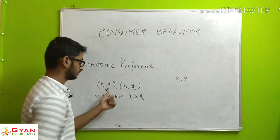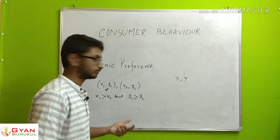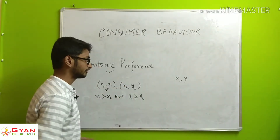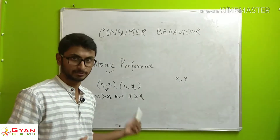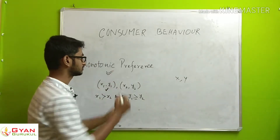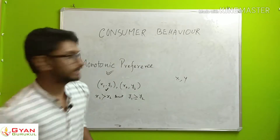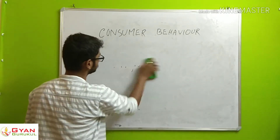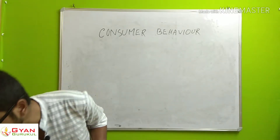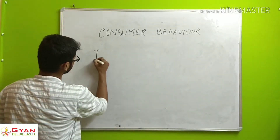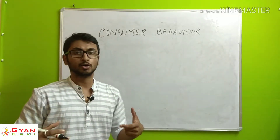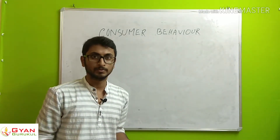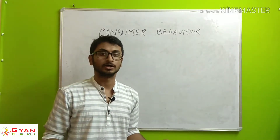So the consumer will prefer the first bundle — there is a behavior, a preference. This is called monotonic preference. In monotonic preference, we move to the indifference curve concept.